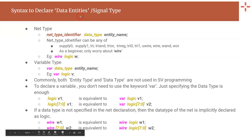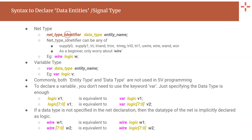The syntax to declare data entities or data objects in SystemVerilog is like this. To declare a net type, you have to first write the net type identifier — for example, wire is a net type identifier. Next, you write the data type, and finally give the entity name. And in the same way, if you want to declare a variable type data entity, you use the keyword var, then the data type, and finally the entity name.